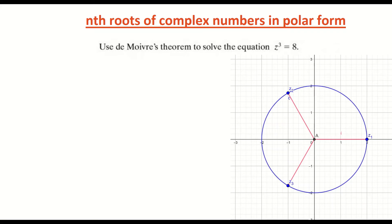In this video we're looking at finding the nth roots of a complex number which is in polar form. The question we're going to look at is using De Moivre's theorem to solve the equation z to the power of 3 is equal to 8.